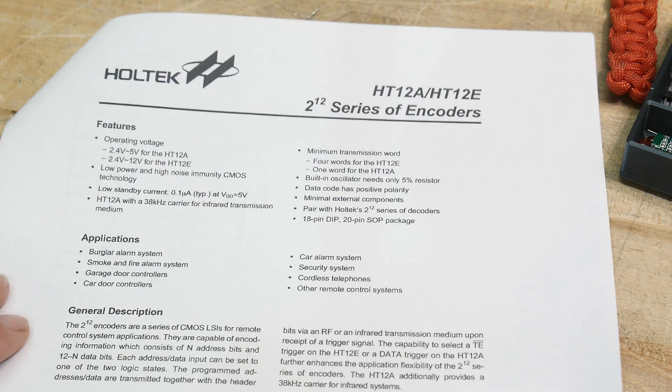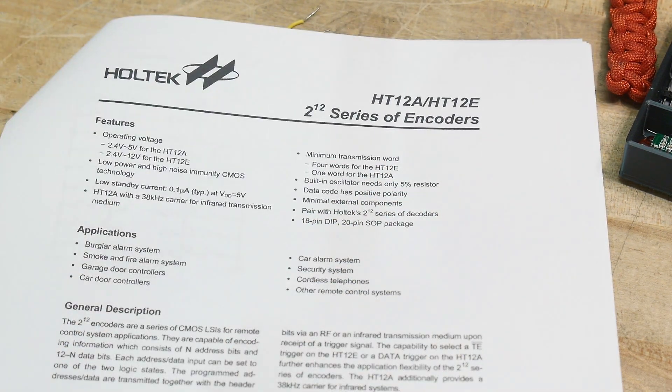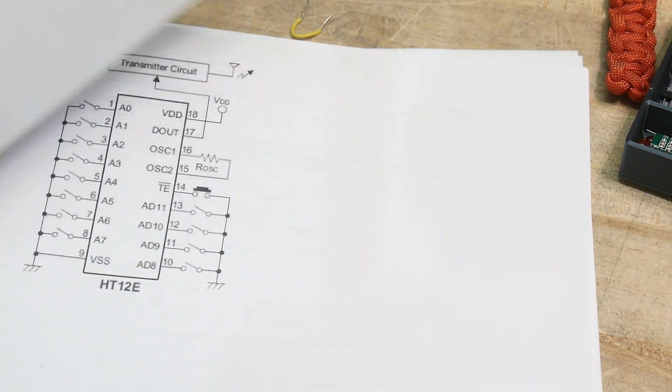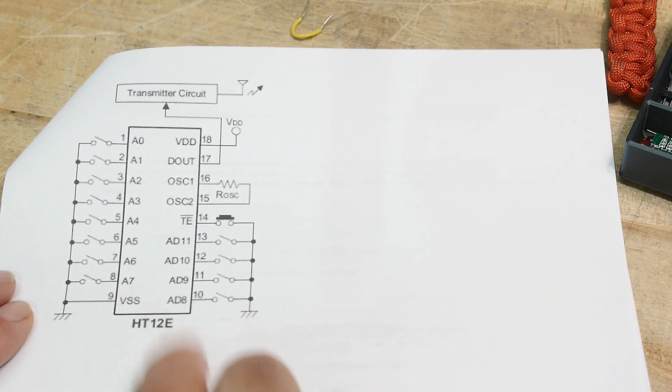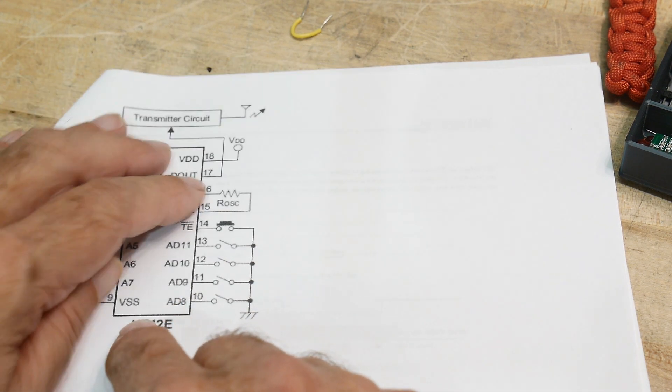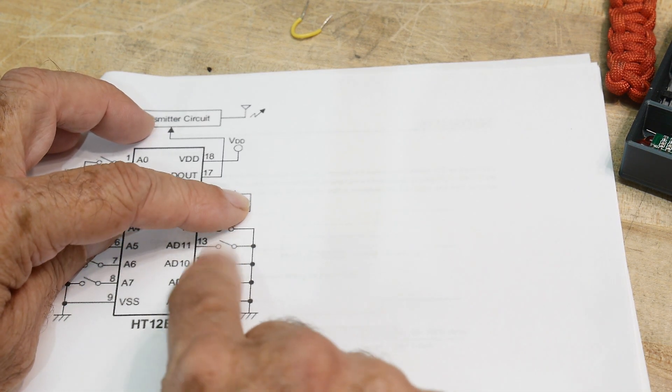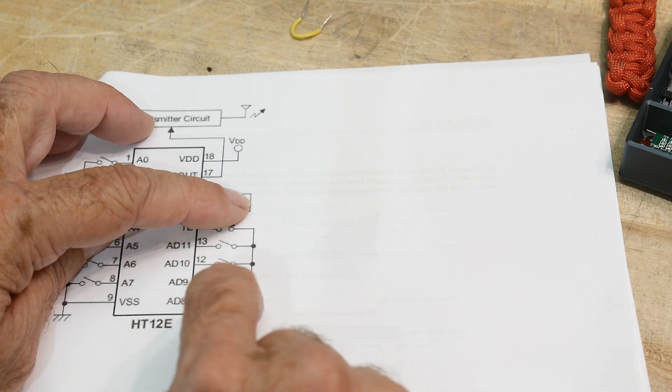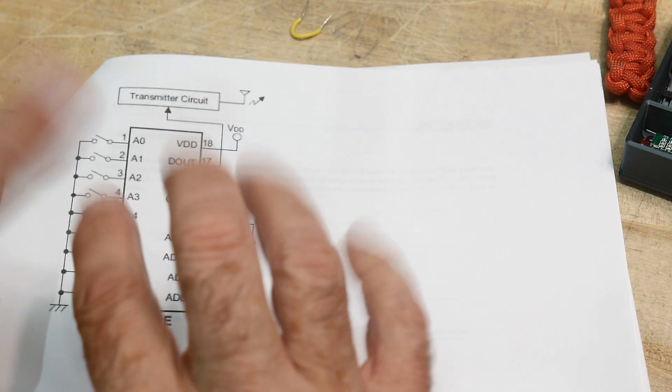And then there's the encoder. Okay. So the encoder is the E, the 12E. And so its circuit looks like this. It's going to look almost the same. You're going to have the address. So you set the eight bits of address, and then you set the four bits you want to transmit. So you set these four bits and then you push the button and it transmits them.